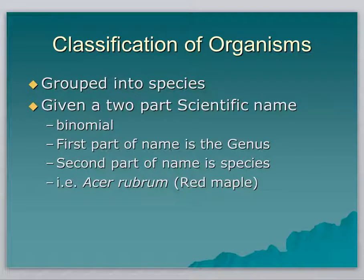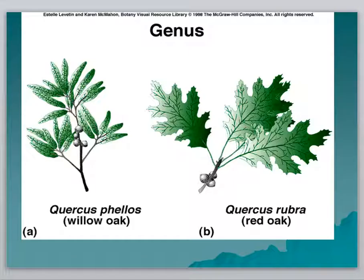Classification of organisms: they're grouped into species using a two-part scientific name — it's called a binomial, or two-named, system. The first part is the genus and the second part is the species. For example, a red maple tree — a horticulturalist would say that's Acer rubrum. Here are a couple of other examples: both oaks. Willow oak on the left and red oak on the right. The genus within the oak family is Quercus. Willow oak is Quercus phellos, and red oak is Quercus rubra.